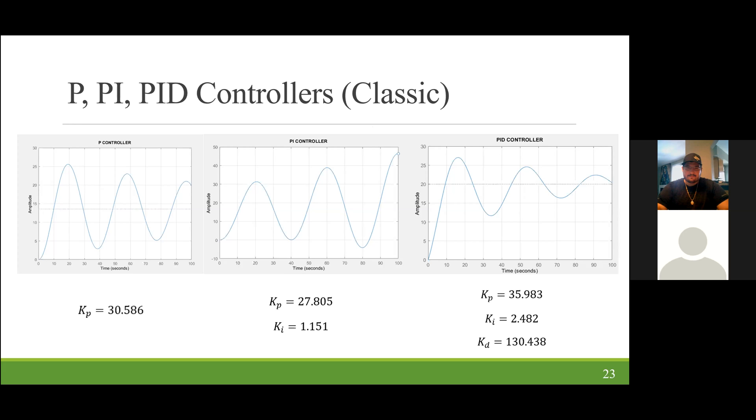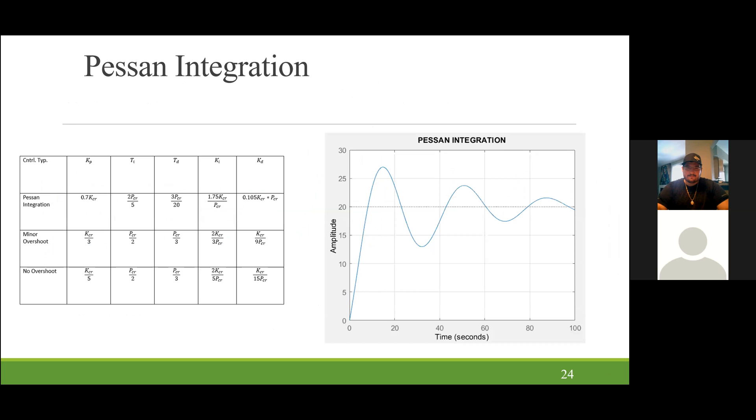So from here we decided to try a Pessen integration to try and bring down the overshoot and help it settle faster. The idea is basically the same as the Ziegler-Nichols method. You use the critical gain and the critical period to obtain the values of the proportional gain, the integral time, the derivative time, the integral gain, and the derivative gain. As you can see from our graph, the Pessen integration did help mitigate a lot of the issues we had, but it still wasn't ideal for the application that we were trying to achieve.